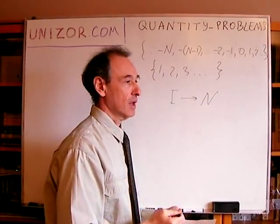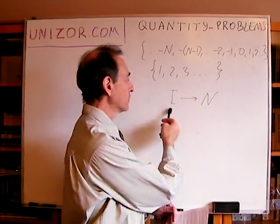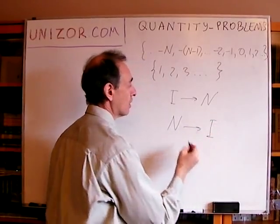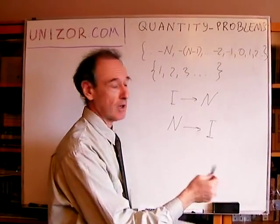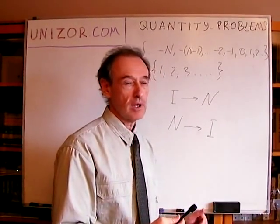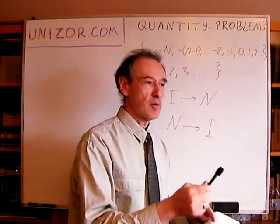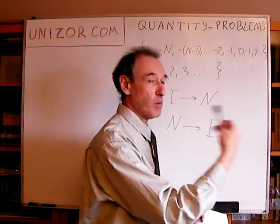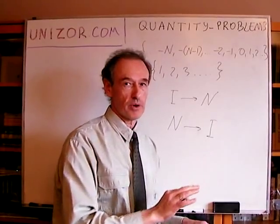How about the reverse? Since natural numbers are a subset of integer numbers, for each natural number there is an integer which is basically the same number — for one, one; for two, two; for 25, 25; et cetera. It will not cover all the integer numbers, but that's not actually required. The one-to-one correspondence is not necessarily working both ways using the same rule — it can work one way using one rule and another way using another rule.